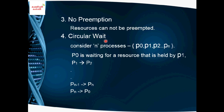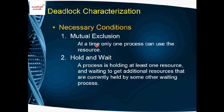The fourth condition is circular wait, which is similar to hold and wait but in a circular form. In a set of processes P0 to Pn, P0 is waiting for a resource held by P1, P1 is waiting for a resource held by P2, and so on — until the last process Pn is waiting for a resource held by P0. All of them are waiting in a circular chain.